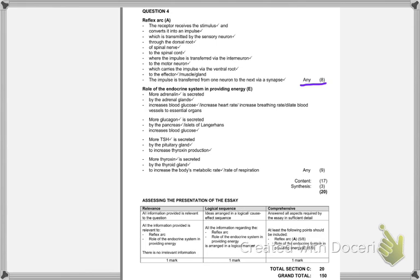So, let's have a quick look at the answer. So, as I said, you need to acknowledge that a stimulus will be received. It will be converted to an impulse. It will be transmitted to a sensory neuron through the dorsal root end of the spinal nerve to the spinal cord, where the impulse is transferred via an interneuron to a motor neuron, which is carried via the ventral root to an effector muscle or gland. It doesn't matter which one you put there. I would go with effector, simply because it's just a nice broad term. And the impulse is transferred from one neuron to the next via a synapse. Now, you can give any eight of these. You don't have to give all of them.